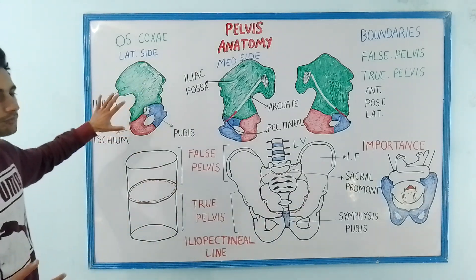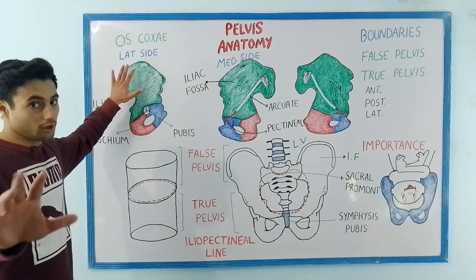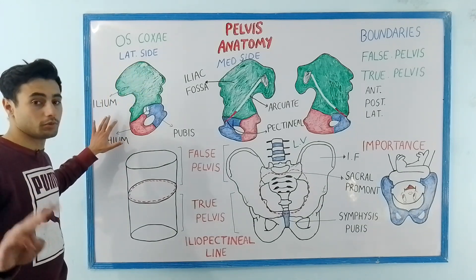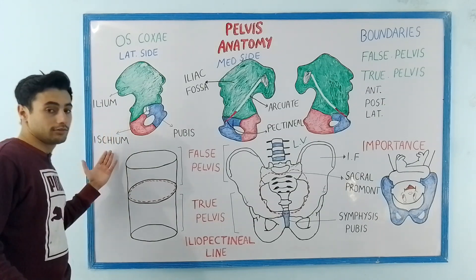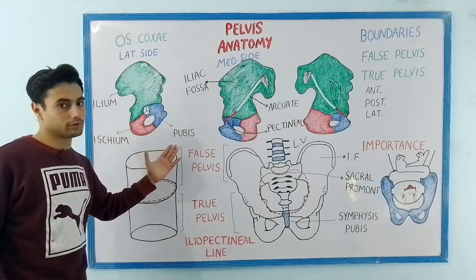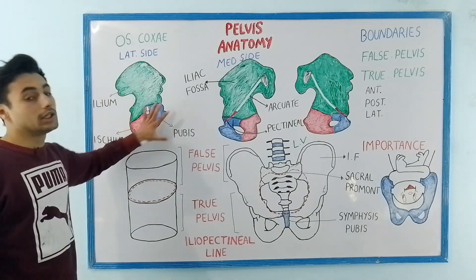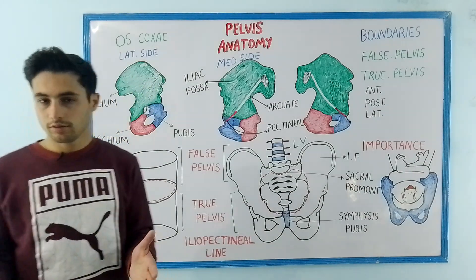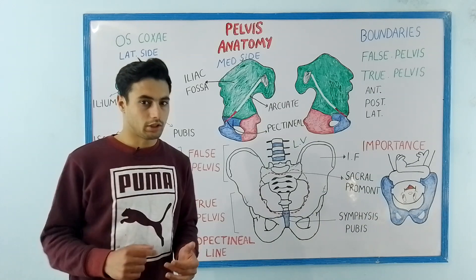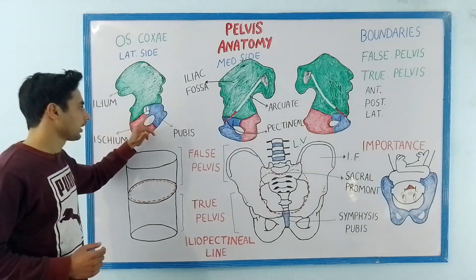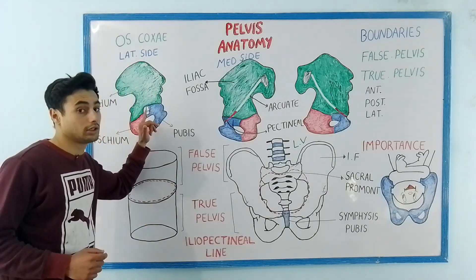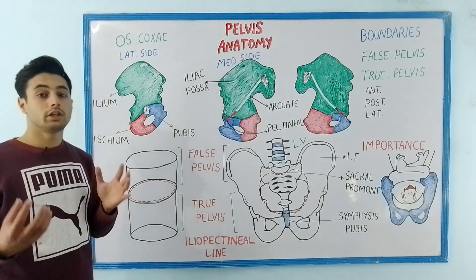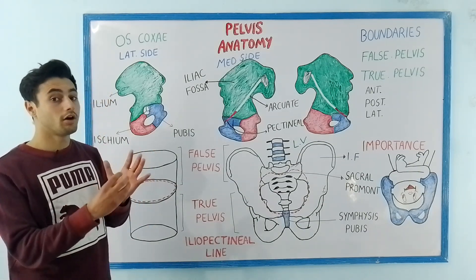Have a look at this diagram. Os coxae, also known as the hip bone, is formed by the fusion of three bones: the ilium, ischium, and the pubis. This is the lateral side of the hip bone, and we know it is the lateral side by looking at this fossa, which is known as the acetabulum fossa. This fossa will form the hip joint with the head of the femur.